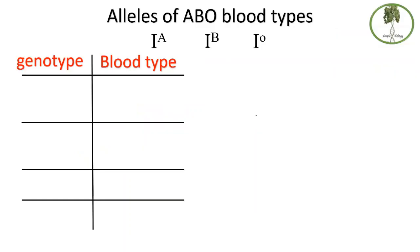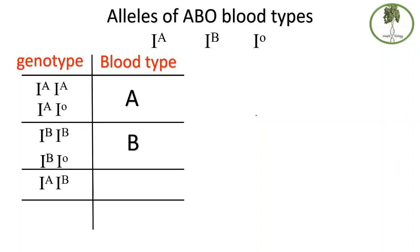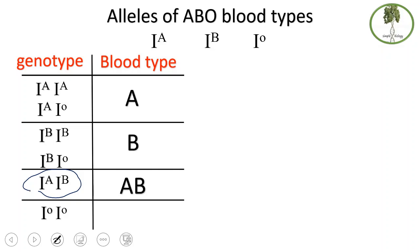The ABO blood group alleles are a good example of codominance. I^A represents the allele for blood type A, I^B for blood type B, and I^O for blood type O. A and B are codominant, and both are dominant over O, so I^O is recessive. Genotypes I^A I^A or I^A I^O both give blood type A; I^B I^B or I^B I^O give blood type B; I^A I^B gives blood type AB because both are expressed; and I^O I^O gives blood type O.